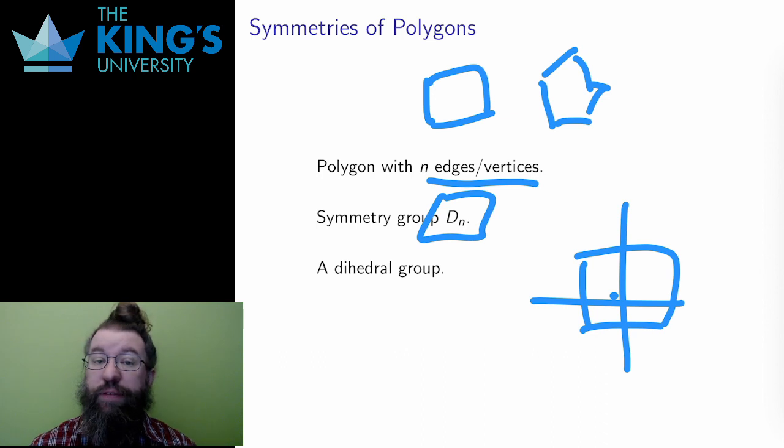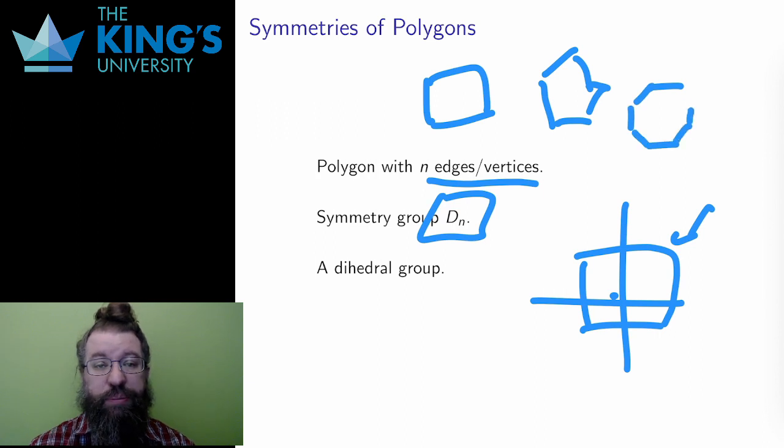So D₄ is the symmetries of the square, D₈ is the symmetries of the octagon, and so on. I'm going to talk about the specific transformations that make up these dihedral groups, but first, it's time for me to actually define this word 'group' I keep using.